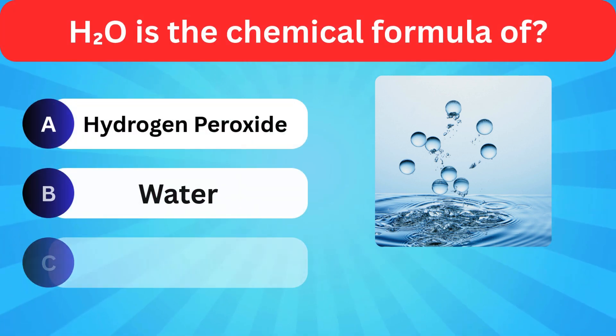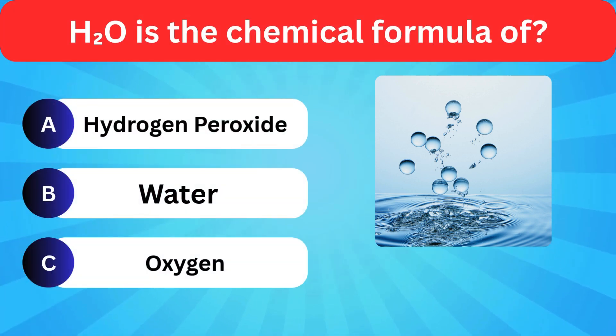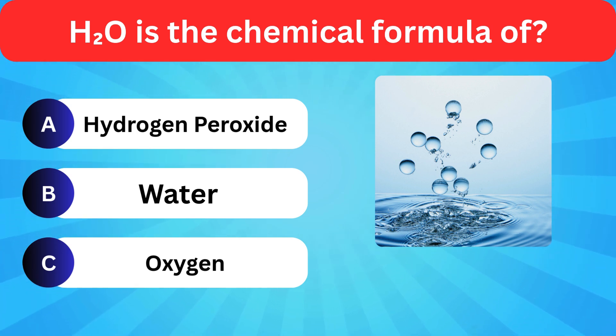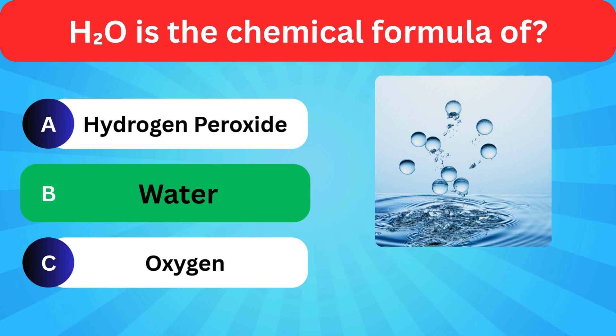H2O is the chemical formula of which substance? Options: Hydrogen peroxide, Water, Oxygen. Correct answer is water.